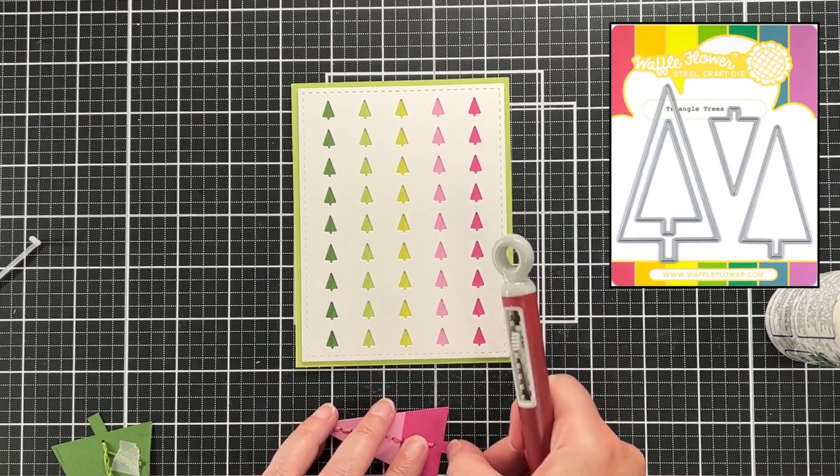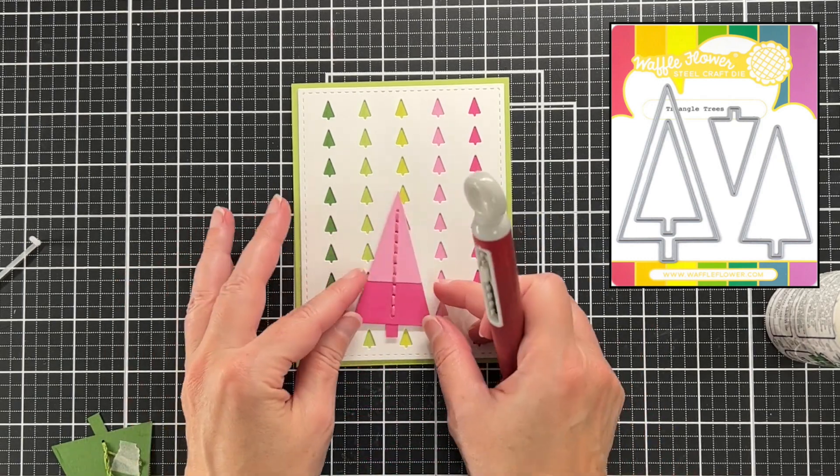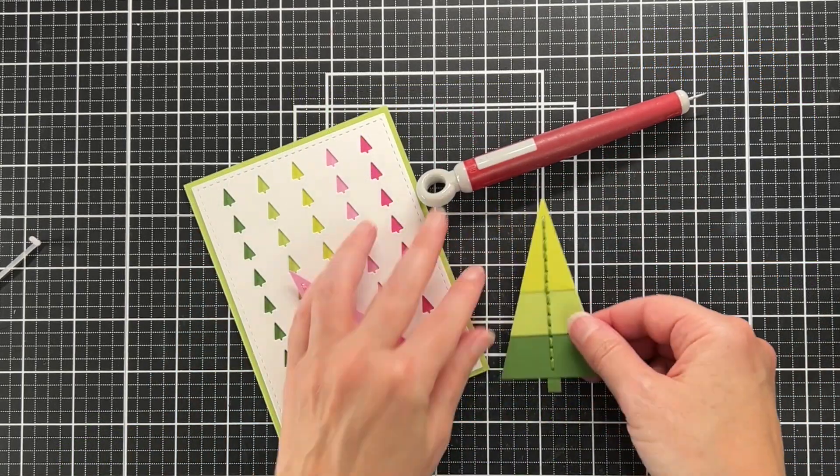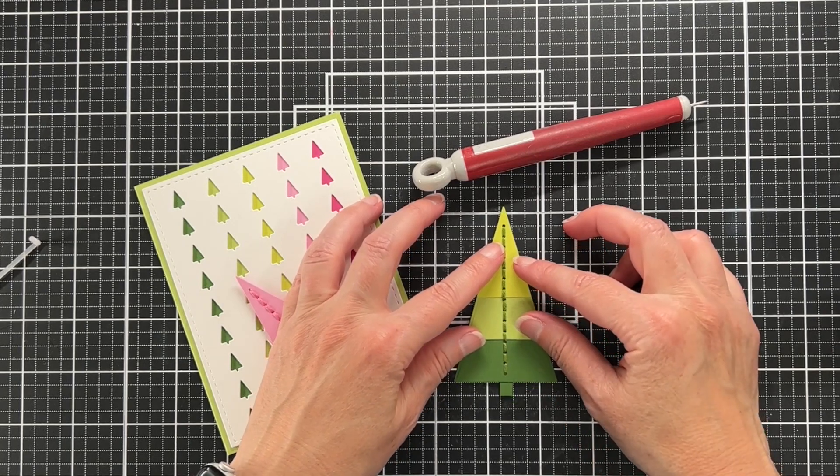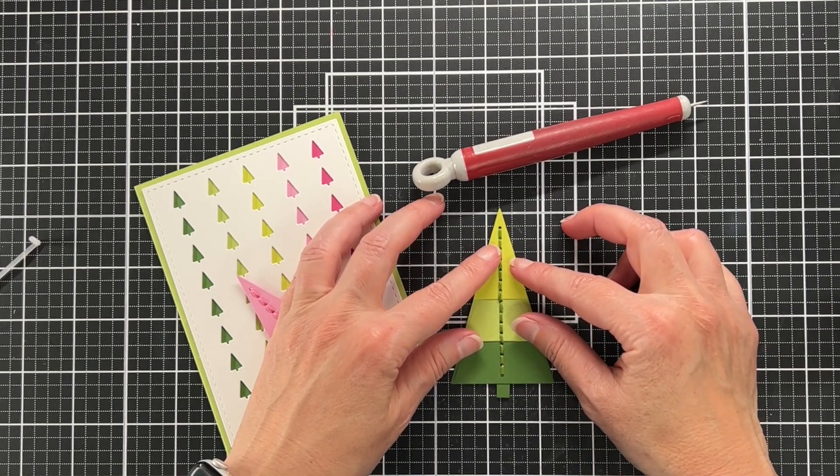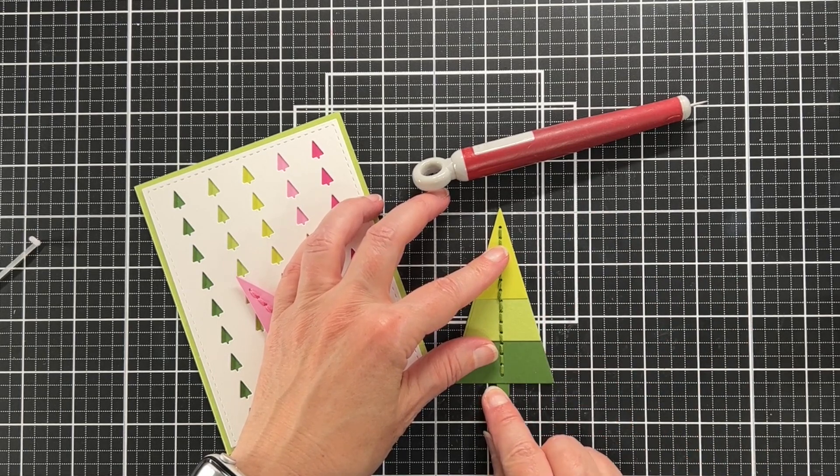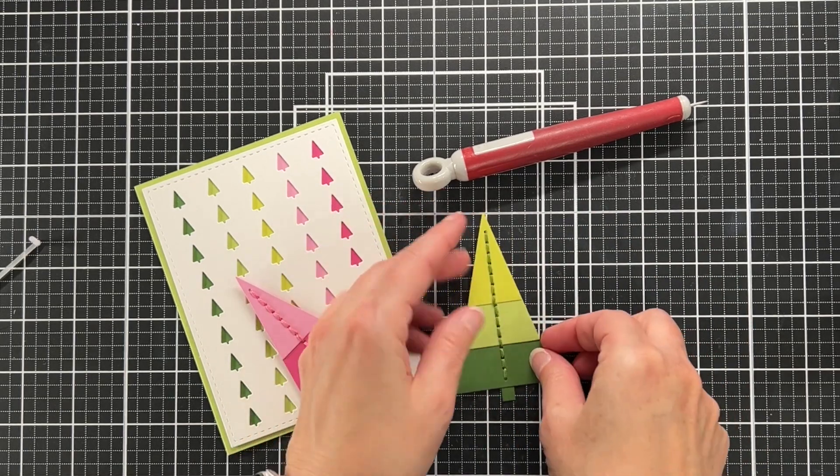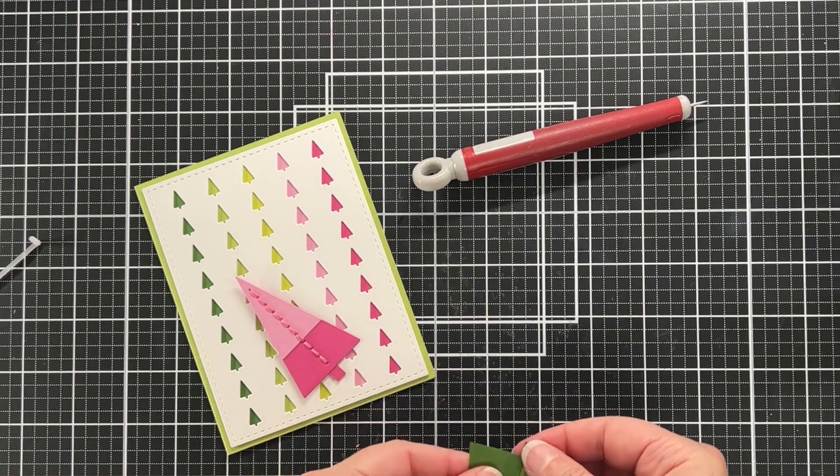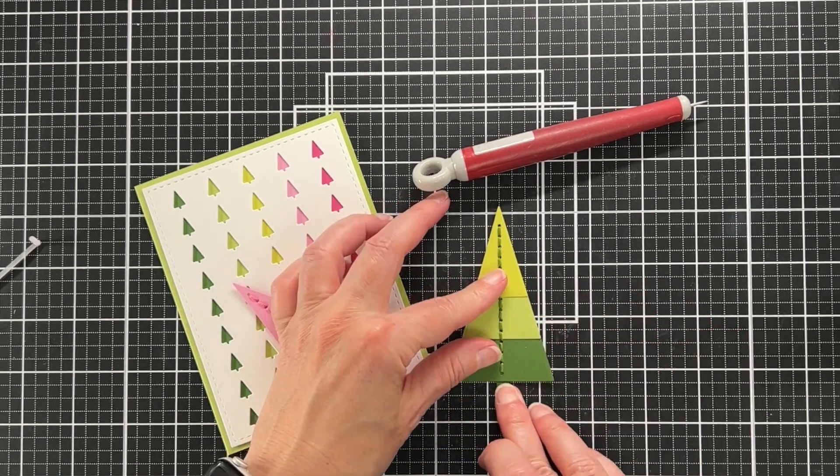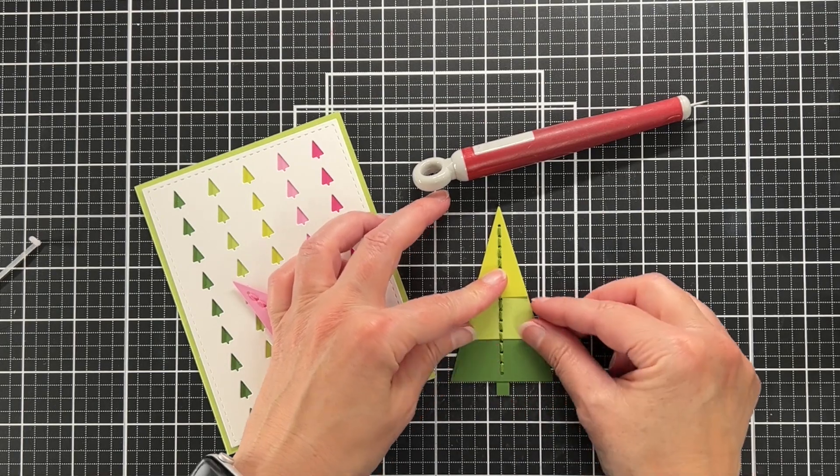If you have no interest in stitching, those dies are really cute and I think there's like some matching products with those, maybe some stencils and some stamps. So you might want to check that out if you're not interested in stitching. Here I'm using my craft mat as a way to just help me line up that little trunk and make sure the trunk looks straight.